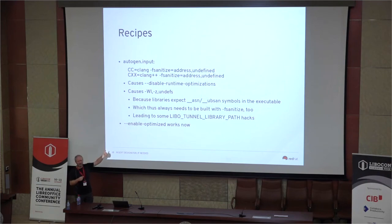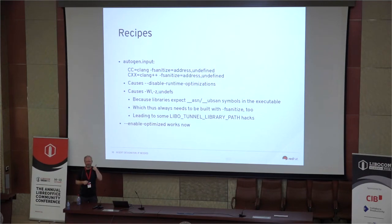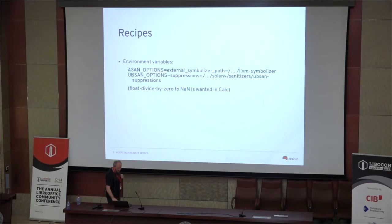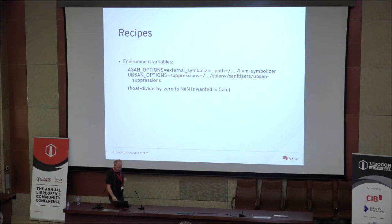Documentation isn't optimal, as always when only a few people care about something. What you need to do is set the CC and CXX variables in your autogen input to add the desired sanitizer flags. That sets some internally named flags in configure. You also need to set environment variables at runtime — including telling it not to do leak detection. In some places, like when Java is started in-process, we tell it not to JIT because JIT-compiled code is hard for sanitizers to analyze, just as with Valgrind.